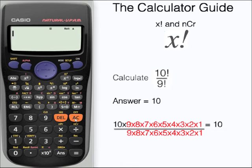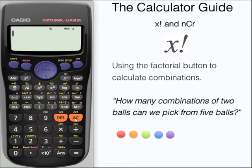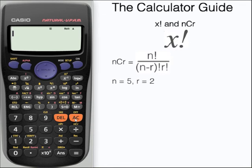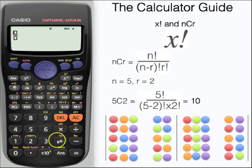We can also use the factorial button to work out combinations, such as how many combinations of 2 balls can we pick from 5. The formula is here: NCR equals N factorial over N minus R factorial times R factorial. Now our N value is 5, we have 5 balls, and our R value is 2.